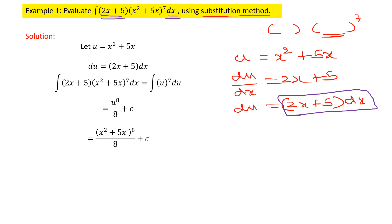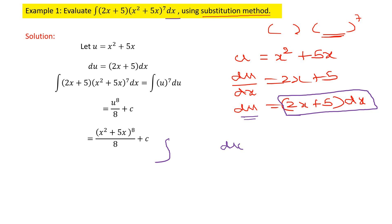Now we can convert the entire problem. In place of (2x + 5) dx, we write simply du. What remains is (x² + 5x)⁷, and since we took x² + 5x as u, this becomes u⁷. So our complicated integral now becomes the simple integral of u⁷ du.